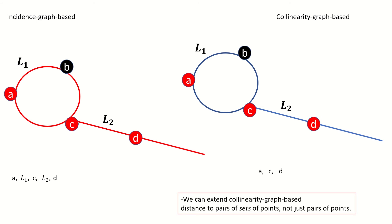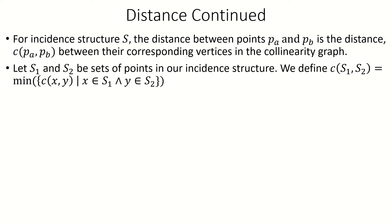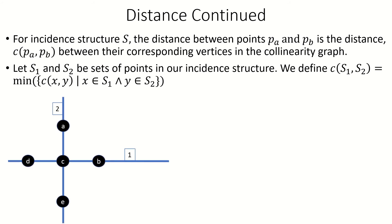Interestingly, we can extend the collinearity graph notion of distance to include distances between sets of points, which we can then use to define distance between any pair of objects, such as a point and a line or two lines. If we have two non-empty sets of point objects S1 and S2, then we say their distance C(S1, S2) is the minimum distance of any pair of point objects from each set. To demonstrate, let's find the distance between set {A, B} and set {D, E} in this incident structure. To do that, we need to find the distances between every pair of points from each set: C(A,D), C(A,E), C(B,D), and C(B,E). The minimum of those values is the distance between these sets of points.